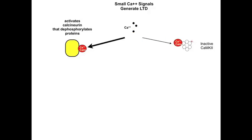Second, it also activates the CAM kinase 2. The dephosphorylating activity of calcineurin is now in competition with the phosphorylating activity of CAM kinase 2. With a low calcium influx, however, the activity of calcineurin dominates — its effects are greater than the weaker phosphorylating effects of CAM kinase 2. Therefore, with weak calcium signals, there is more dephosphorylation than phosphorylation.